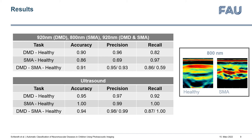For unseen data, the accuracies for all tasks ranged from 0.86 to 1.0 for all image types. These initial results on a very small dataset are very promising across different settings and tasks, with discriminative power for both ultrasound and photoacoustic images. Photoacoustic images might enrich the data with functional information beyond the visible morphological structures in ultrasound images.